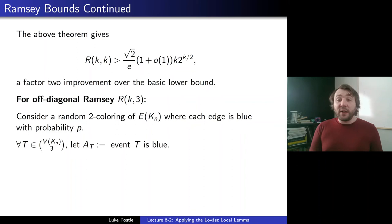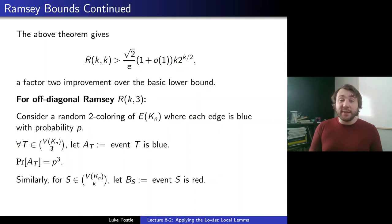We have to avoid our bad events. For blue triangles T: let At be the event that T is all blue, with probability p³. For red k-sets S: let Bs be the event that S is all red, with probability (1−p)^C(k,2). We want to avoid all such monochromatic events.